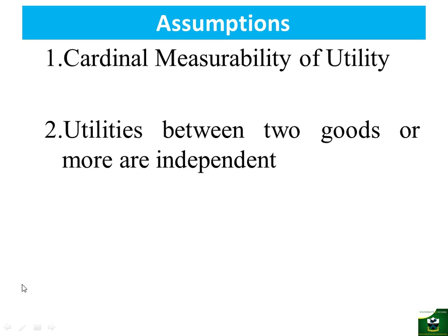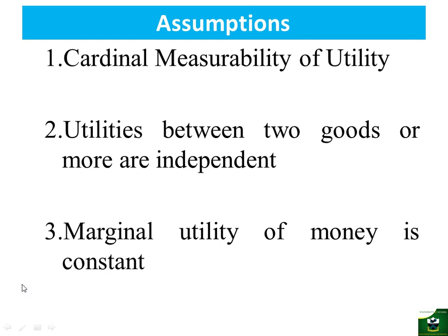The third assumption is that the marginal utility of money is constant. The marginal utility of money is simply the additional satisfaction that a consumer gets by spending the last kwacha on a given unit. Since consumers buy different commodities, the last kwacha spent on each commodity must be equal. The last assumption is on introspection, meaning that any given consumer is able to know what is happening in the mind of another consumer in terms of their consumption choices, so consumers will have good information about what other consumers will decide.